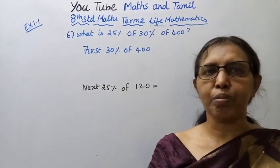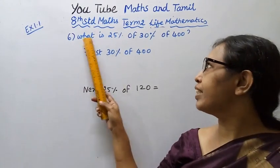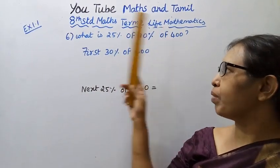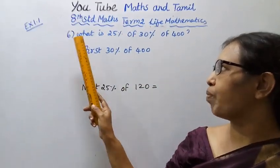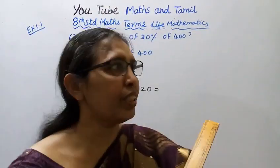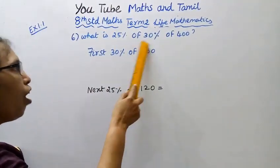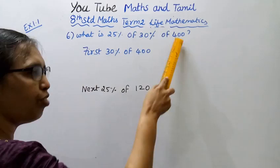Hello students, welcome to Max and Tamil channel. It's 10th standard, Max term 2, Life Mathematics, Exercise 1.167. What is 25% of 30% of 400?